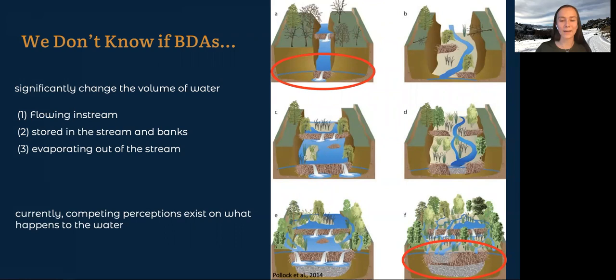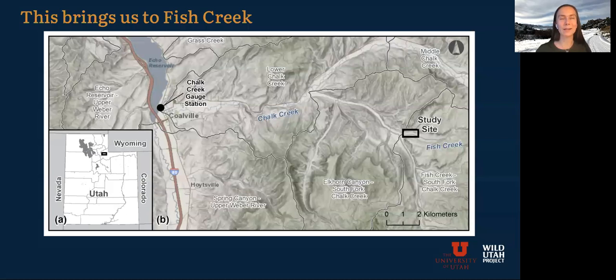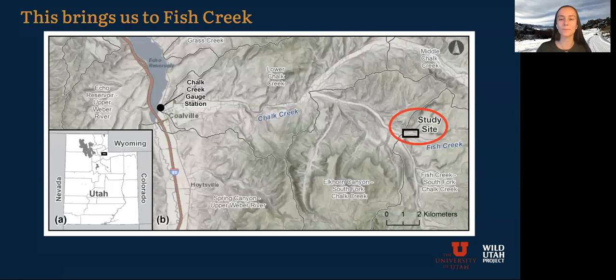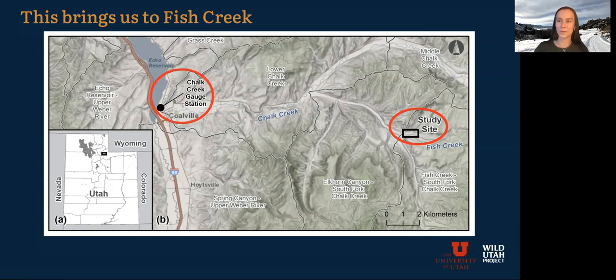So that leads me to my field site, Fish Creek, which is located about an hour drive northeast of Salt Lake City. It is a first order stream that flows into Chalk Creek, which is a tributary to the Weber River right above Echo Reservoir. My study site is here on the right, and there's also this Chalk Creek gauge station that is run by the USGS, and they measure stream flow right before Chalk Creek hits Echo Reservoir and joins the Weber River.